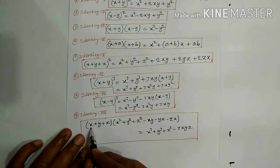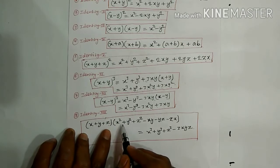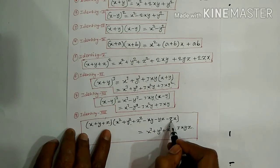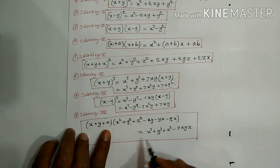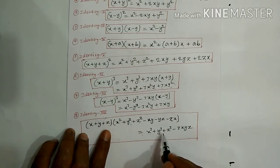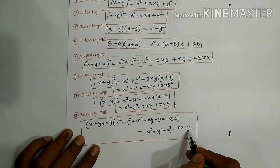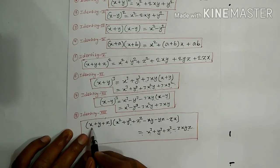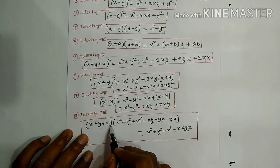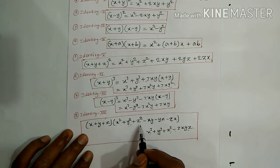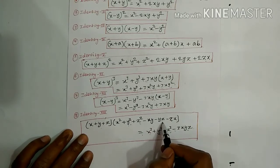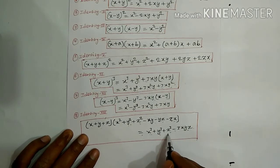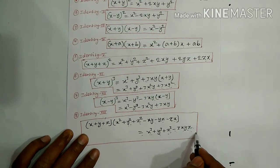Identity 8: X plus Y plus Z into X square plus Y square plus Z square minus XY minus YZ minus ZX, is equal to X cube plus Y cube plus Z cube minus 3XYZ.